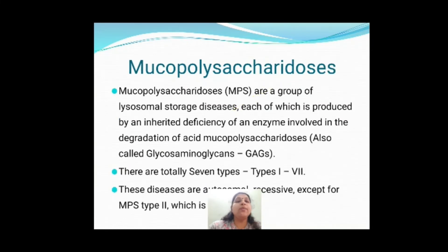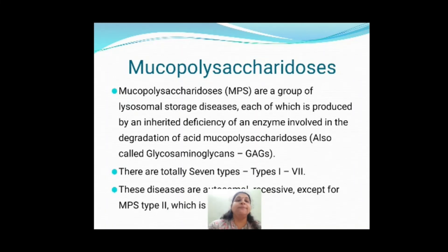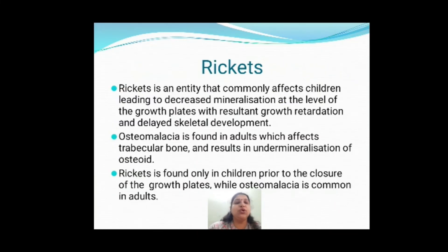Mucopolysaccharidoses are a group of lysosomal storage diseases. There are 7 types — type 1 to type 7. There is going to be deficiency of enzymes involved in the degradation of mucopolysaccharides, also called glycosaminoglycans, which are seen in the ground substance of connective tissue. The enzymes involved in degradation of MPS will be deficient, causing mucopolysaccharidosis.